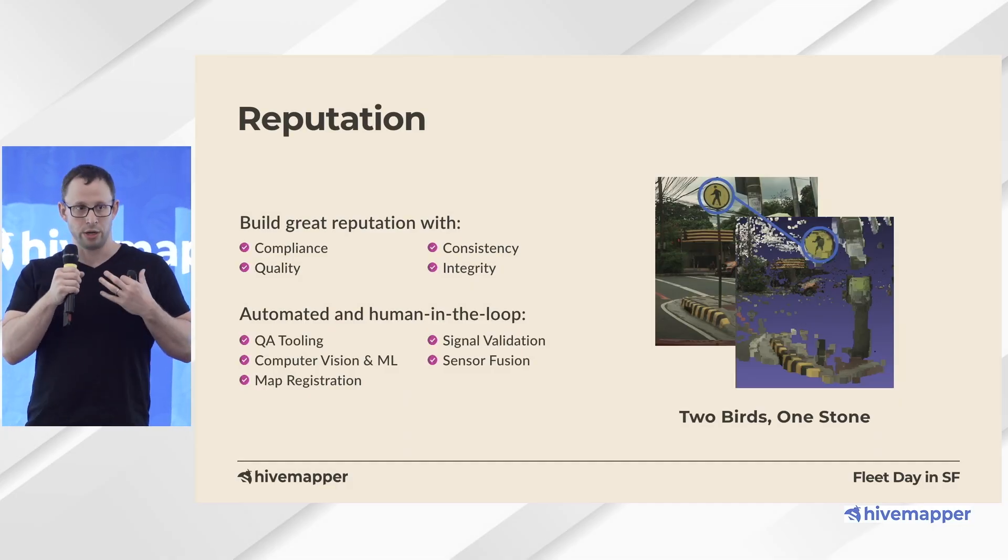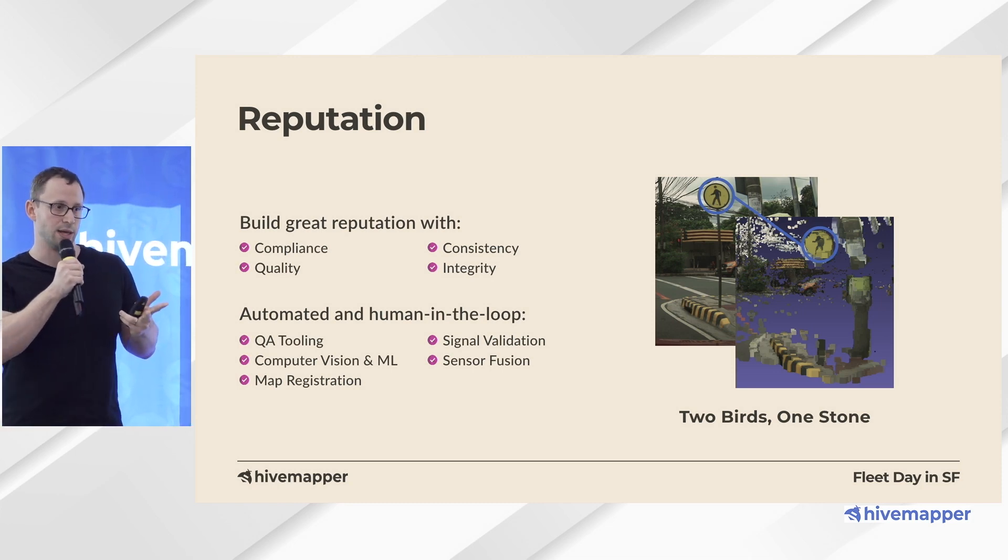The reputation for the contributor is something that's long-lived. It's hard to build a really good reputation, but it's very easy to destroy it. We do alert people about conditions where you probably don't want to contribute bad data, and we do that in the application. If your mount becomes misaligned, it flags a tool to help realign it. If the image quality has an issue, we let the user know. It's in everybody's interest to only contribute the highest quality data, and we do as much as we can to help.